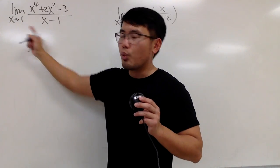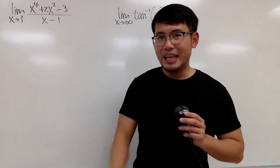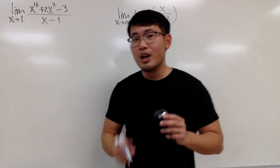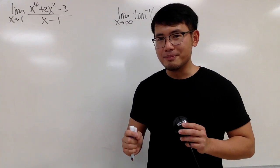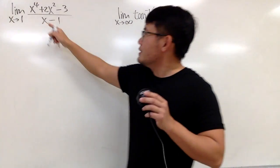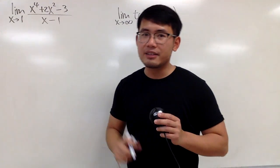First one right here, the limit as x approaching one of this, and you guessed it. If you're putting one into all the x right here, you will end up with 0 over 0. Therefore, you have to do more work for this. And the truth is, on the top, we can actually factor that out.